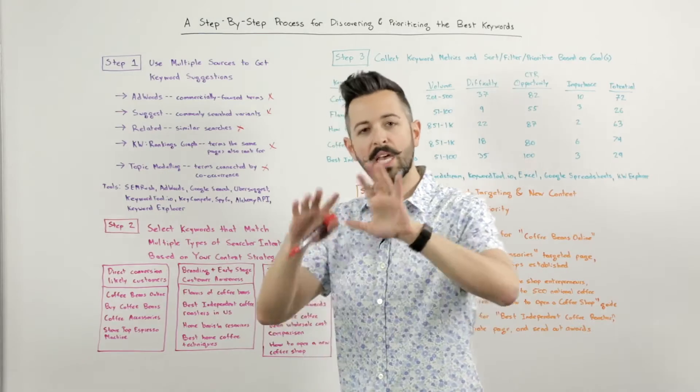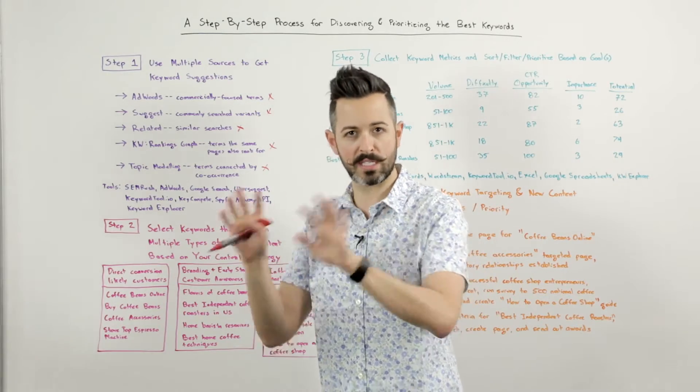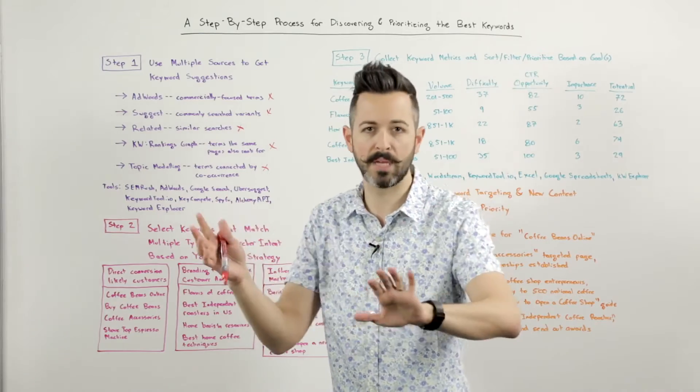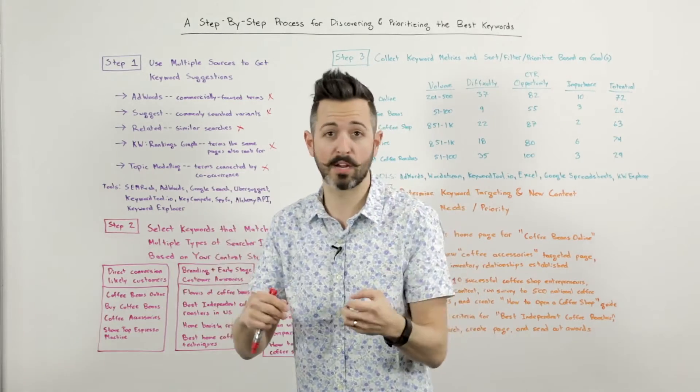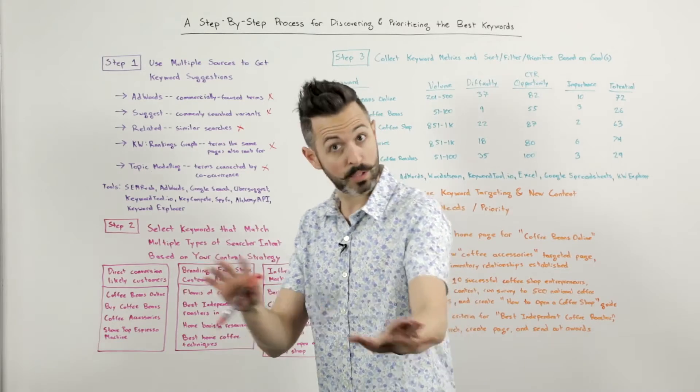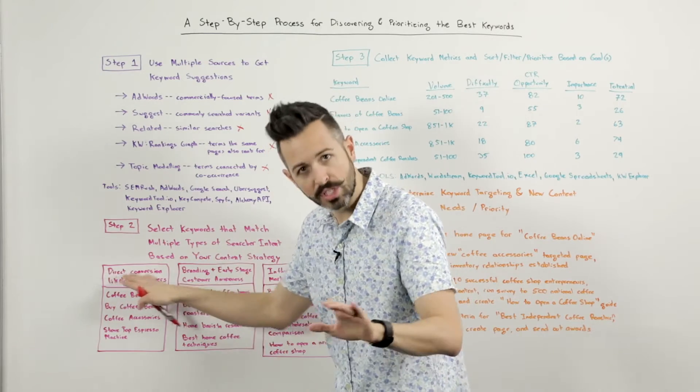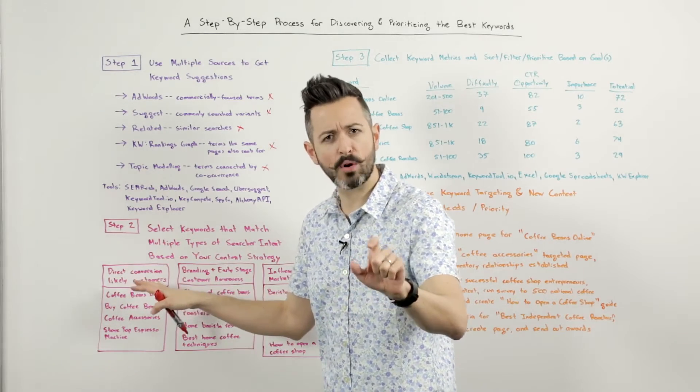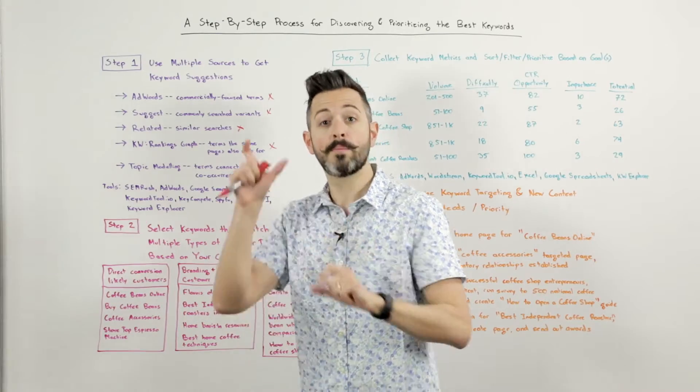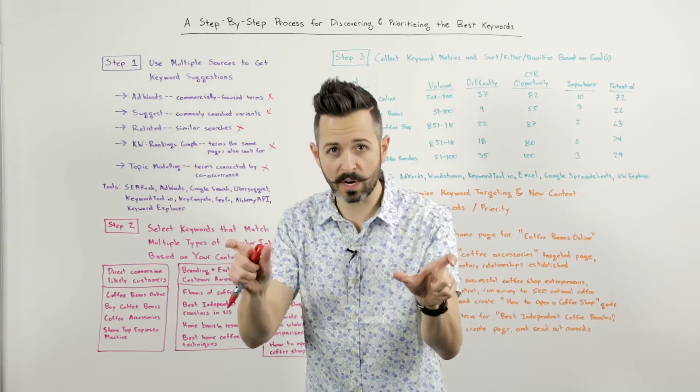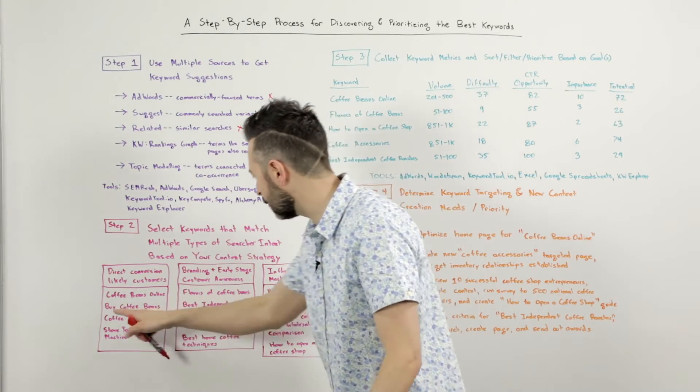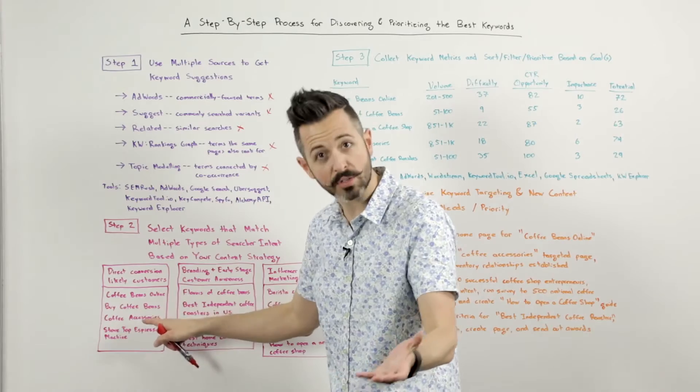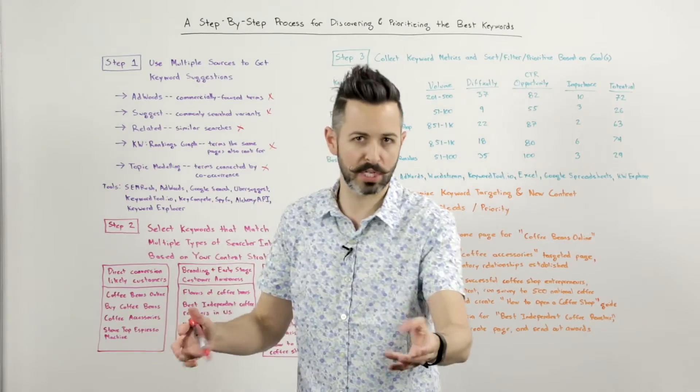For example, let's say I'm an online coffee bean roaster and seller. Maybe I'm independent, I have a location, but I also want to sell my beans and my grounds and accessories online, which is awesome. There are some keywords that are going to match with my goal of direct conversion. People are likely looking for this because they want to buy it, and I want to be in front of them when they're looking to buy it. Those would be keywords like coffee beans online, buy coffee beans, coffee accessories, stovetop espresso machines, getting more specific.